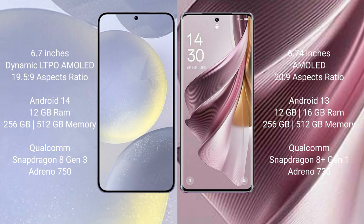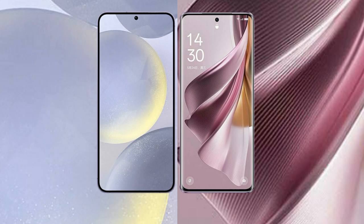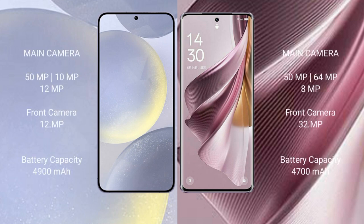The Samsung Galaxy S24 Plus is powered by the Qualcomm Snapdragon 8 Gen 3 processor with Adreno 750 GPU. The OPPO Reno 10 Pro Plus comes with 12GB or 16GB RAM and 256GB internal storage, powered by the Qualcomm Snapdragon 8 Plus Gen 1 processor with Adreno 730 GPU.